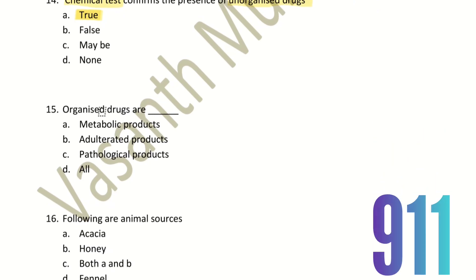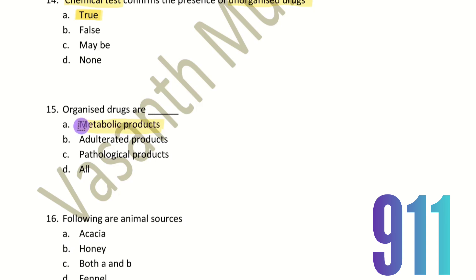Fifteenth question: Organized Drugs are what? The choices are metabolic products, adulterated products, and pathological products. The right answer is metabolic products.